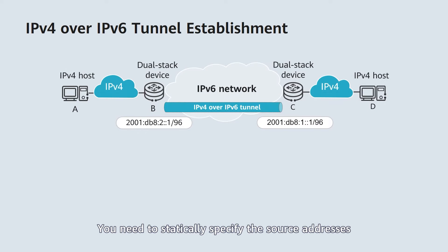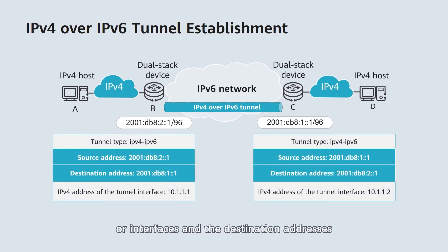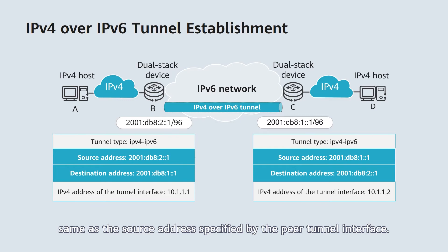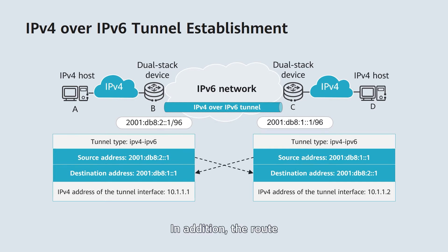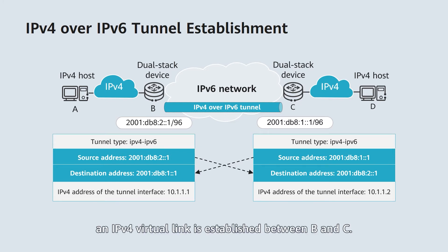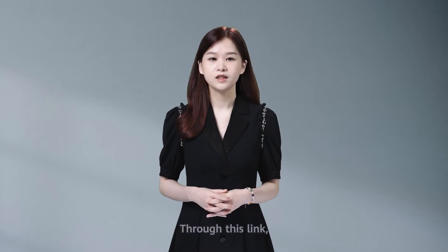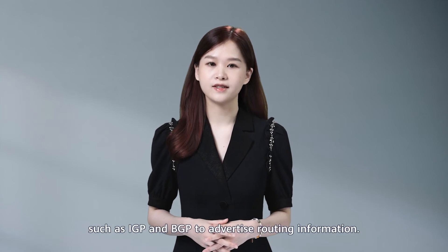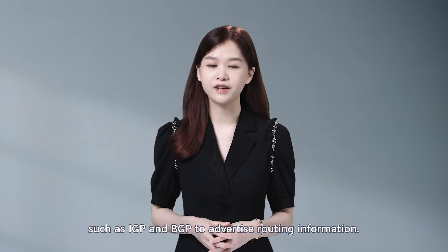An IPv4 over IPv6 tunnel is manually configured between border routers. You need to statically specify the source addresses or interfaces and the destination addresses or destination domain name. The destination address of the local tunnel must be the same as the source address specified by the peer tunnel interface. In addition, the route to the peer interface that receives packets must be reachable. After these configurations are completed, an IPv4 virtual link is established between B and C. Through this link, B and C can advertise routing information.